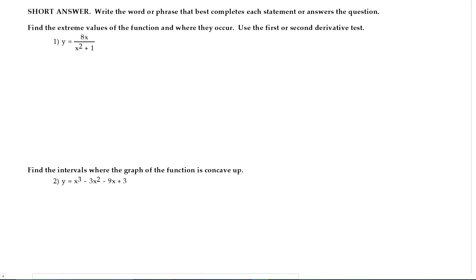So find the extreme values, those happen at critical points, so we have to find the critical points, which is where the first derivative is zero. So there's a quotient rule, bottom times the derivative of the top minus the top times the derivative of the bottom all over the bottom squared.